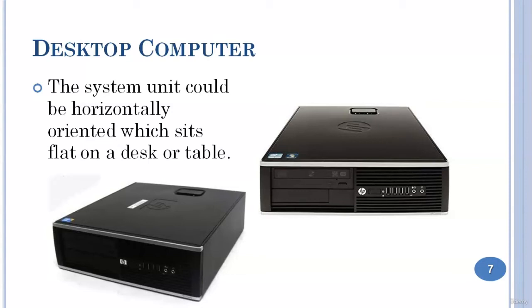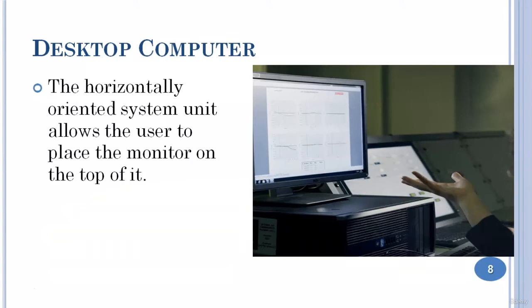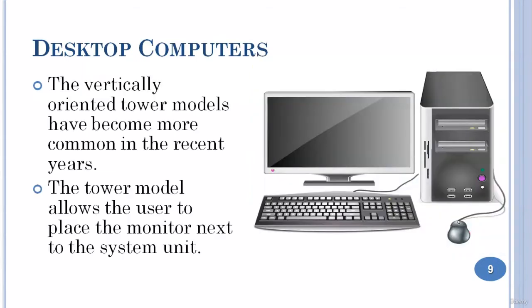The system unit comes in two different variants. It could either be horizontally oriented, meaning it sits flat on a desk or table, which has the advantage of allowing the user to place the monitor on top of it. The other variant is the vertically oriented system unit, also referred to as the tower model, which has become more common in recent years and allows the user to place the monitor next to the system unit.